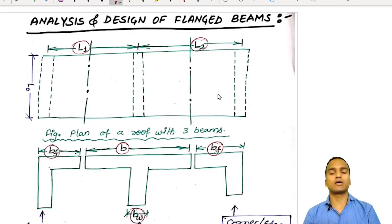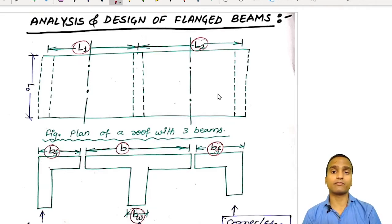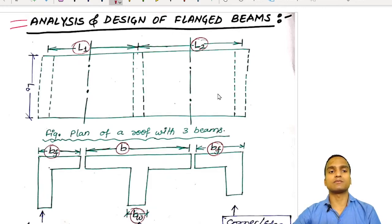Hello dear students. After understanding singly reinforced beams and doubly reinforced beams, in which we have only considered reinforced concrete beams with a rectangular cross section, we are now going to discuss a different type of beam which is very important and found in every part of a structure — that is the flanged beam. We are going to understand only the analysis part of flanged beams.